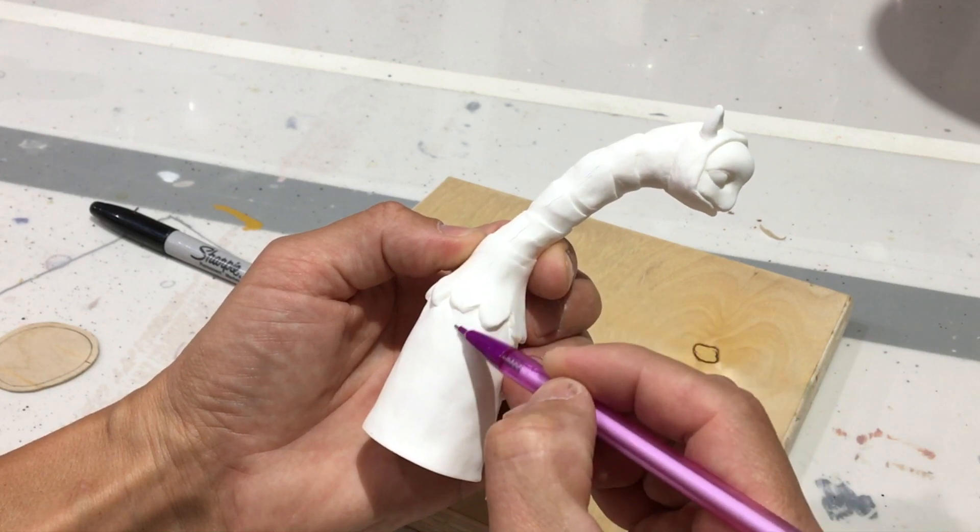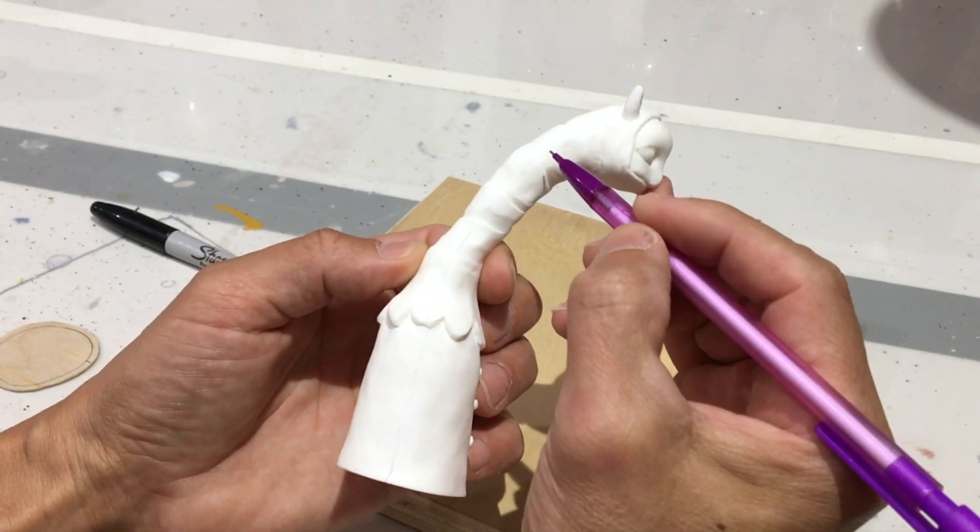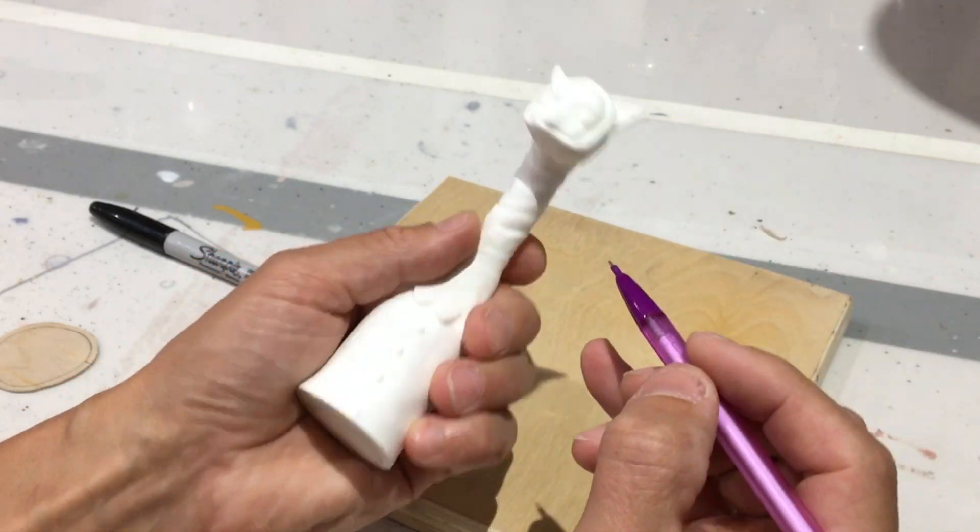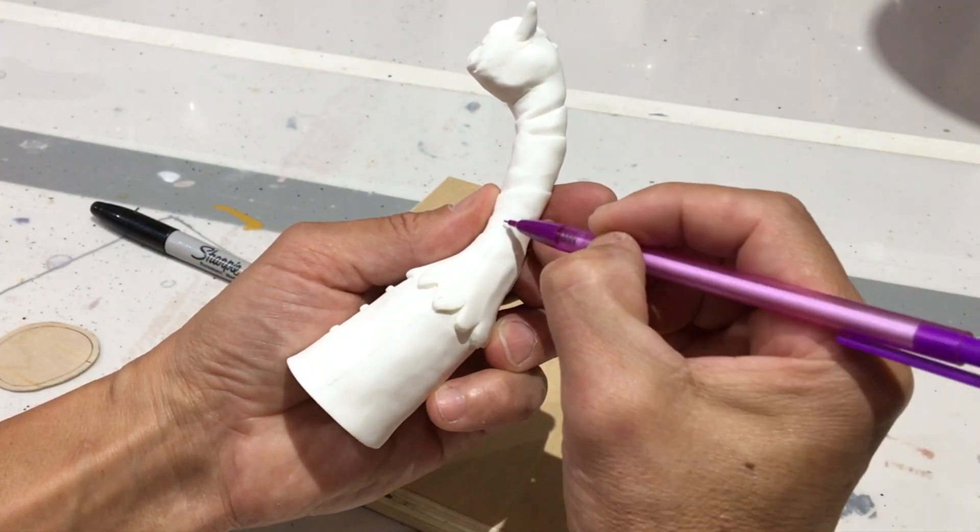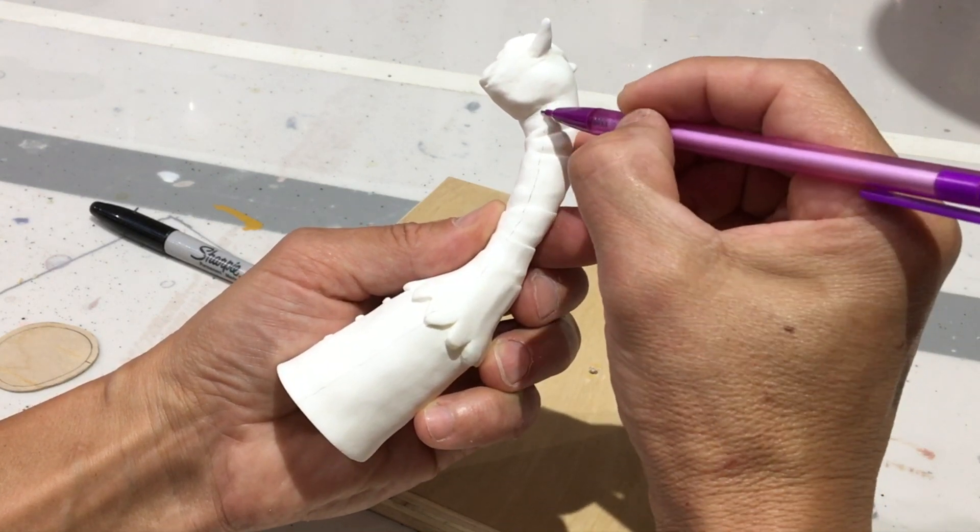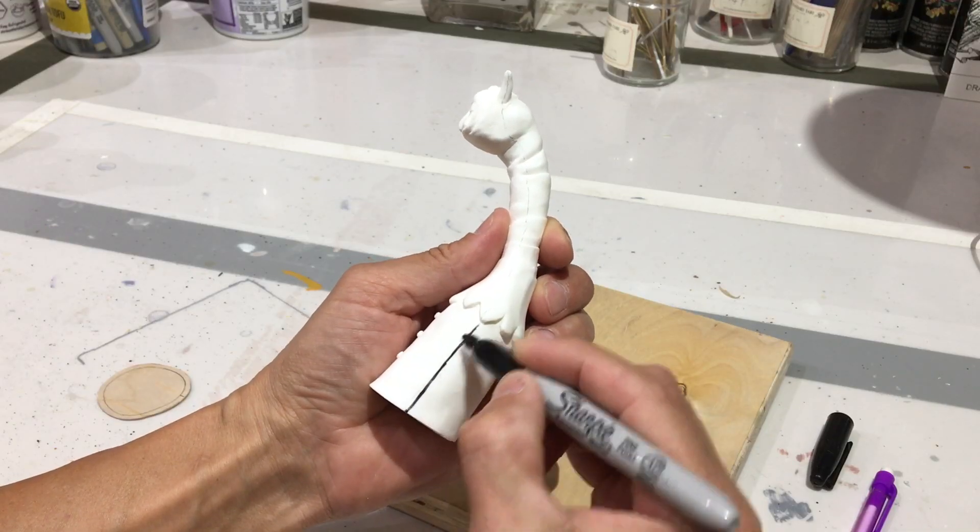Next I mark the line where I will be cutting the mold open. This is the line that I will actually try to follow with the scalpel when I'm opening the mold up. I like to ghost it on with a pencil and then fine tune it a little bit and then come back over it with a fat sharpie.